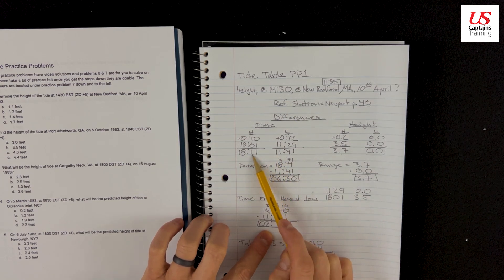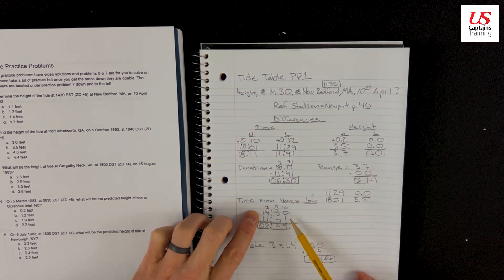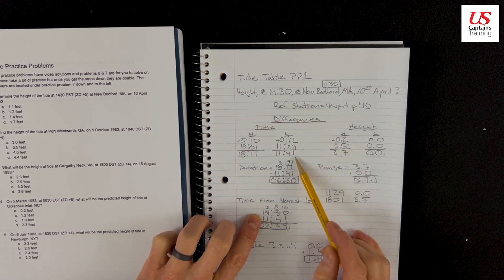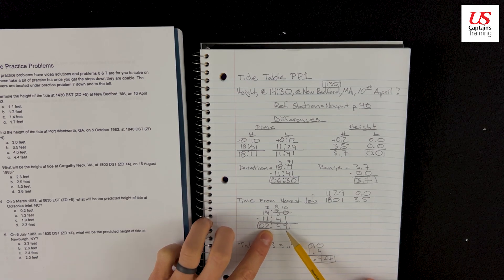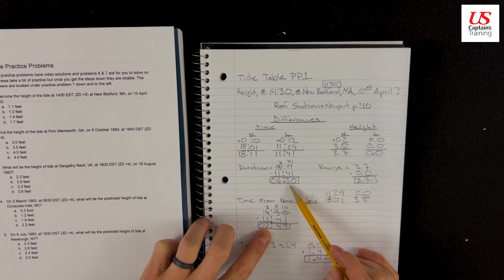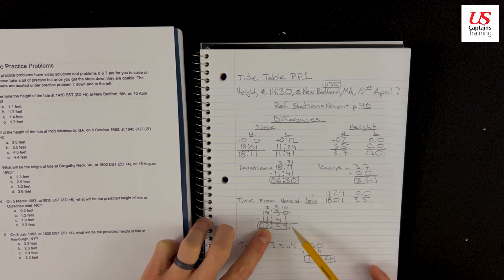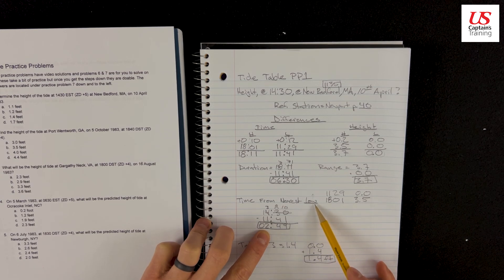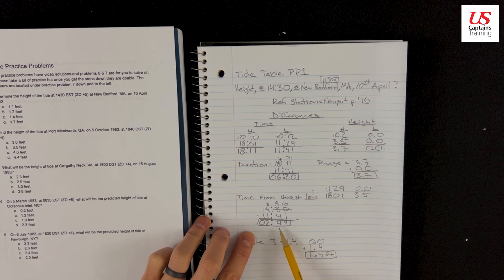So we do the subtraction, right? 14:30 minus 11:41 comes to 2 hours and 49 minutes. And we can double check because 2 hours and 49 minutes is less than half of 6:30. If it was more than half, we would be on the wrong track, but we're not. It's less than half. We know we're on the low. Now that we have the range, duration, and time from the nearest low, we can enter into table 3. Let's do that.